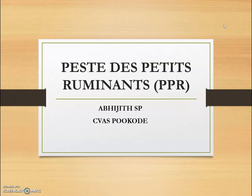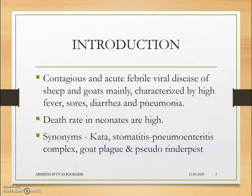Today we are discussing PPR, Peste des Petits Ruminants. PPR is a contagious and acute febrile viral disease of sheep and goats, mainly characterized by high fever, sores, diarrhea, and pneumonia. Death rate in neonates is high. The synonyms of the disease are Goat Plague, Pseudorinderpest, and Stomatitis-Pneumoenteritis Complex.